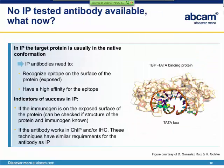If there is no IP-tested antibody available, these are the things you can watch out for. In IP, the target protein is usually in the native conformation. Therefore, an IP antibody needs to recognize an epitope on the exposed surface of the protein. Furthermore, as it is a pull-down reaction, the antibody also needs to have a high affinity for the epitope. So if you look for an antibody that works in IP, it is worth checking if the immunogen is on the exposed surface of the protein — though you can only do this if the structure of the target protein and the immunogen used to generate the antibody are known.